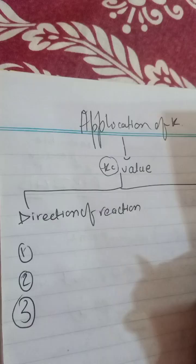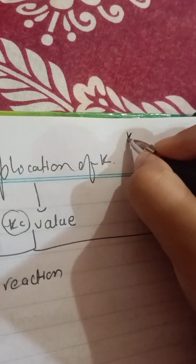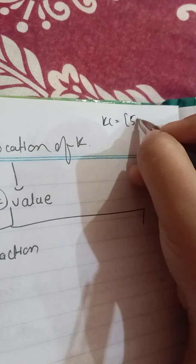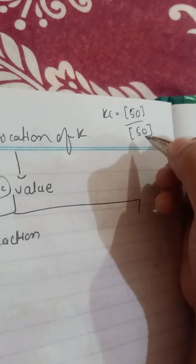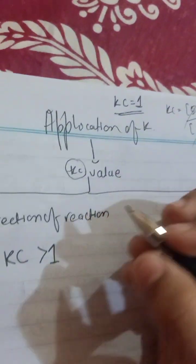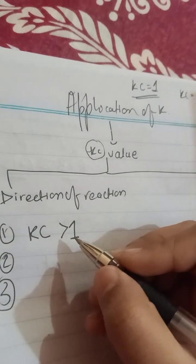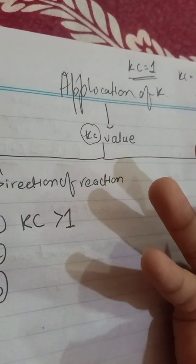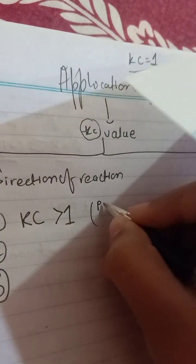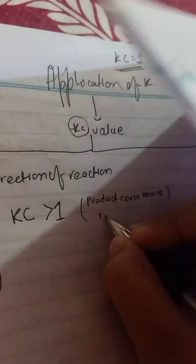First is the direction of reaction. For example, if Kc is less than one — as you know, Kc equals product concentration divided by reactant concentration — if product concentration is 50 and reactant concentration is 50, both are equal, so they cancel and Kc equals one. If Kc is more than one, it means product concentration is more and reactant concentration is less.